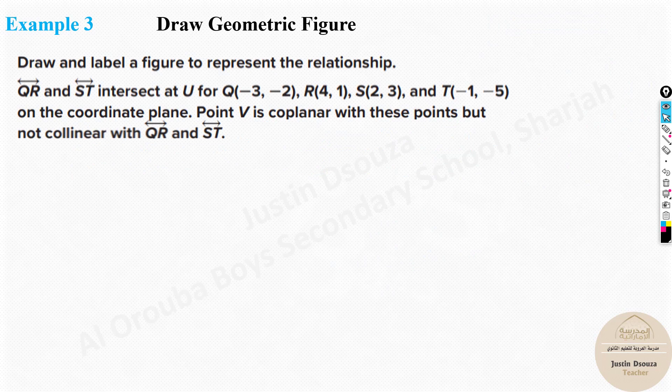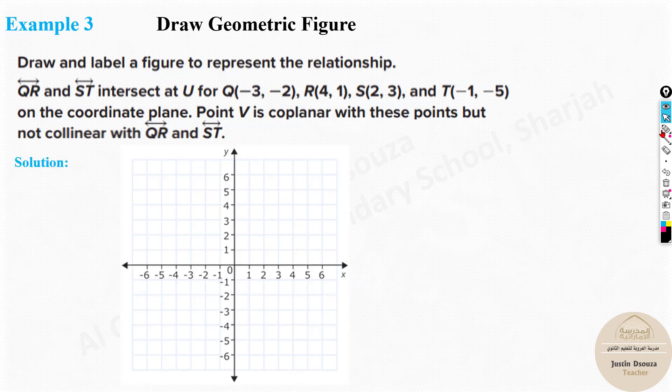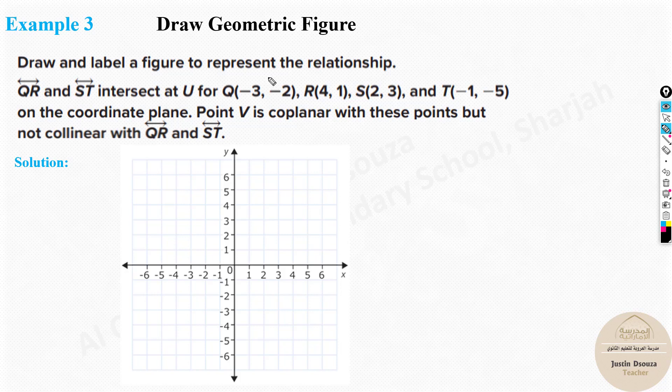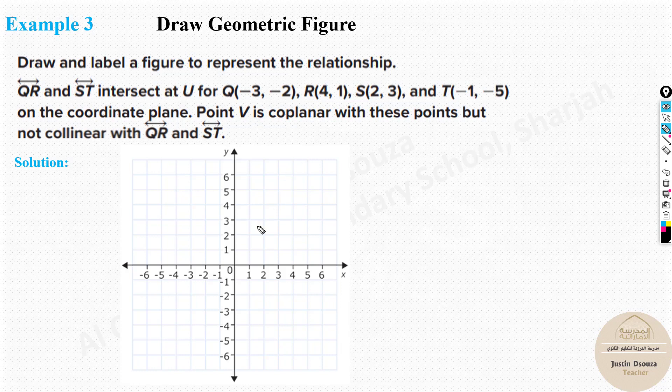In this example, we have been told to draw all these points in a coordinate plane. So let's use a coordinate plane. Let's try drawing it up. So over here, we need to draw and label it. The line QR and ST intersect at a point U. And they have given all the coordinate points of Q, R, S, T. So what we will do is, first we will just start pointing them out. Q is at minus 3. That is, it is always given as X and Y. X is minus 3 and Y is minus 2. So somewhere over here.